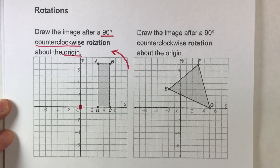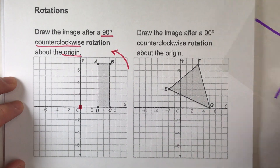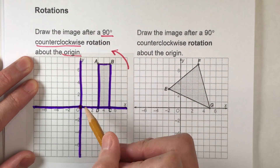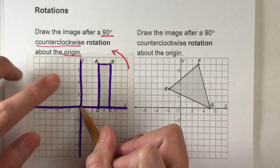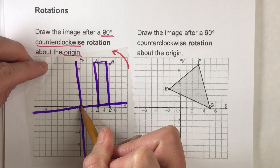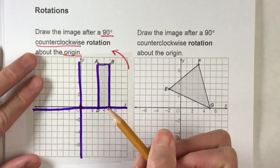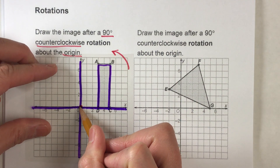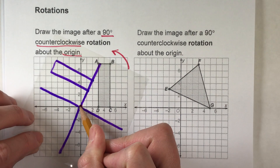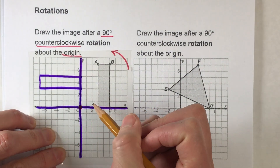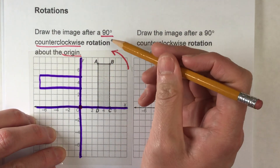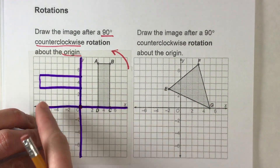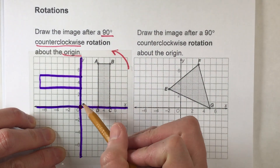Counterclockwise is in that direction, so everything is gonna rotate around that point in this direction. And then the last thing to pay attention to is that it's going 90 degrees. To help me visualize what a 90-degree rotation's gonna look like, I made a little transparency here. So we're rotating around the origin — I'm gonna put my pencil on the origin — and I'll know it's 90 degrees when the x-axis ends up at the y-axis, because the x and y-axis are at 90-degree angles to one another.